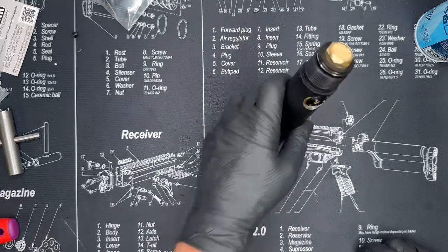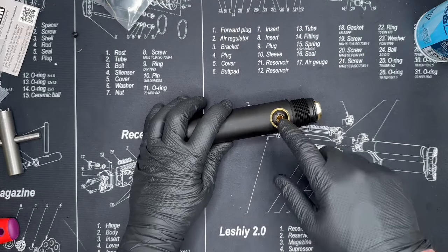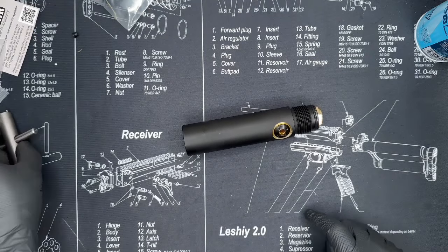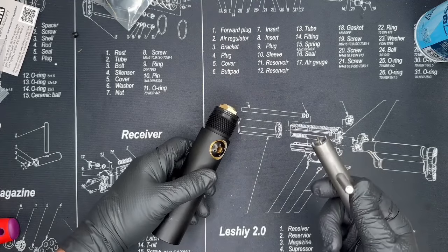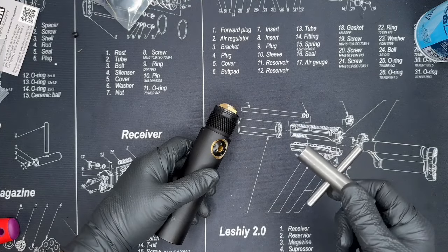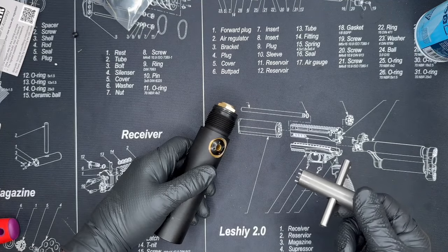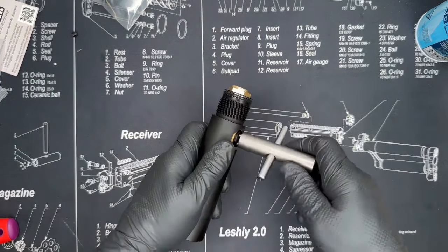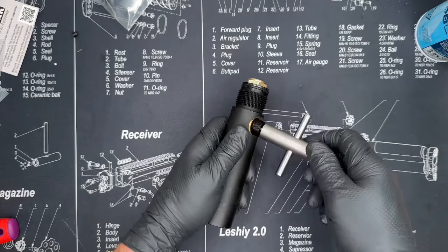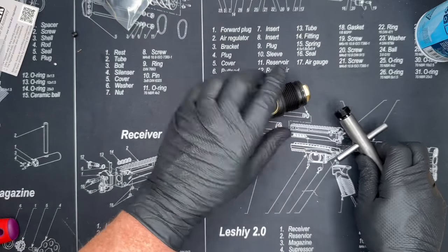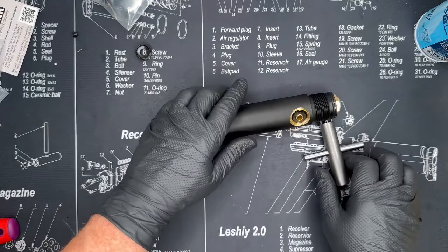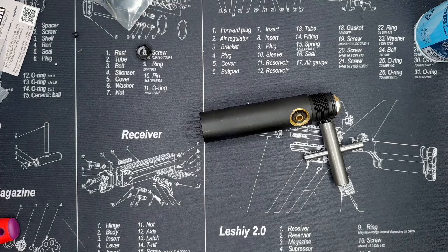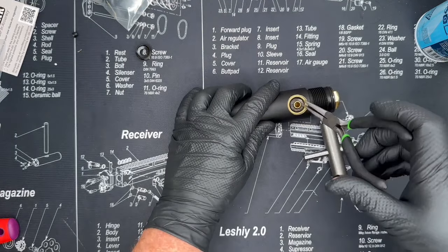We're going to first remove the adjustment screw from the OEM Reaper regulator. It's best to use the Edgun spanner wrench, but if you don't have it you can use needle nose pliers. Locate the four pins and unscrew the adjustment ring. Once you've unscrewed the adjustment ring, you can set that off to the side.